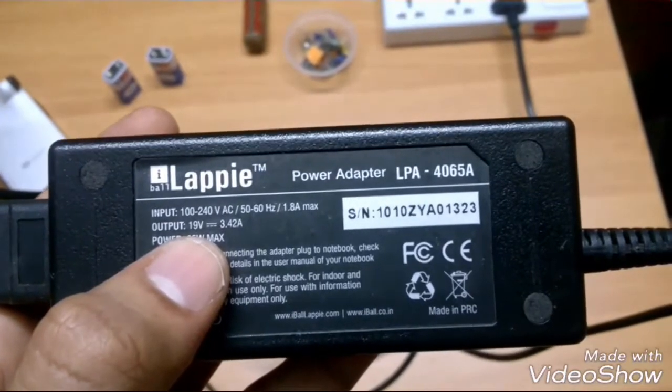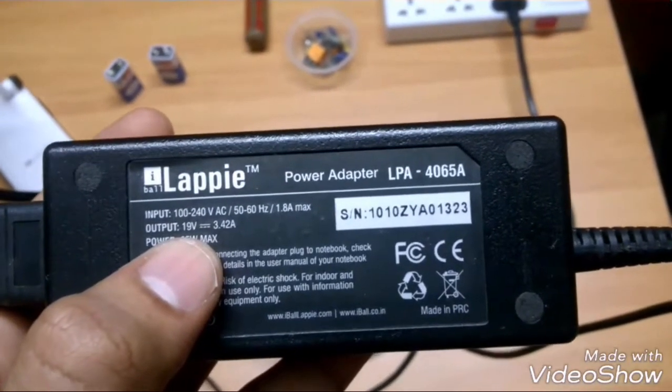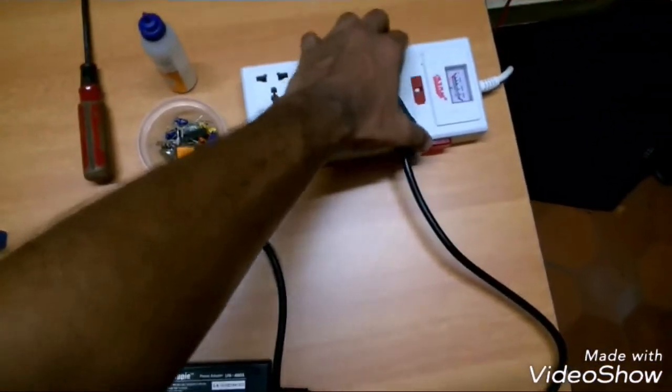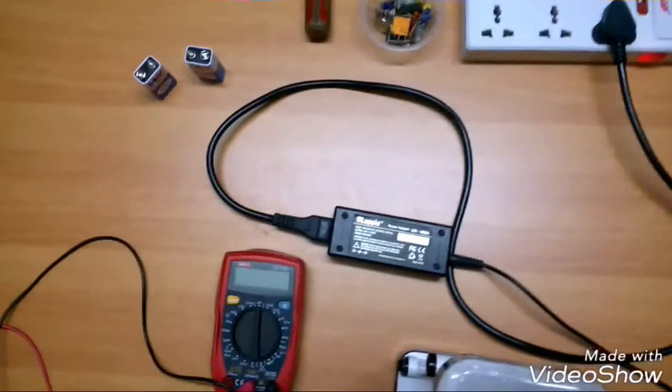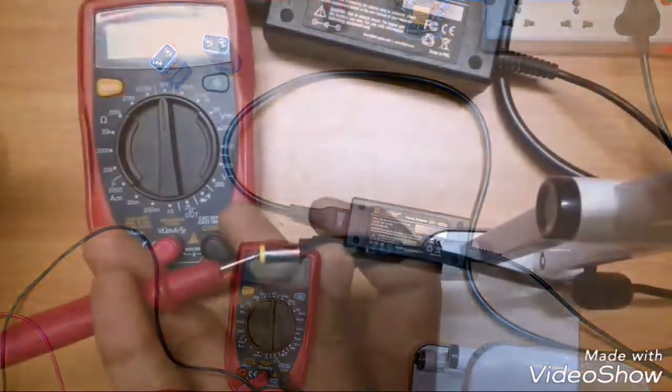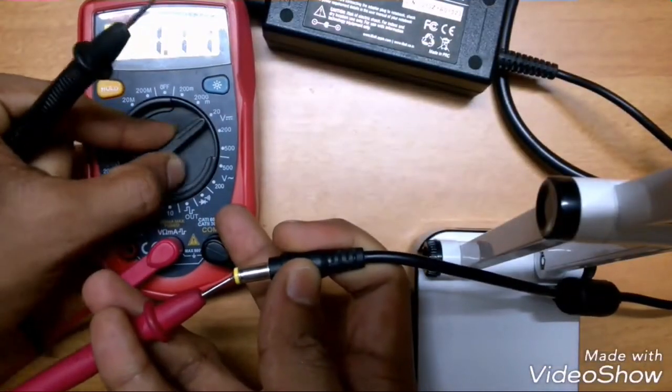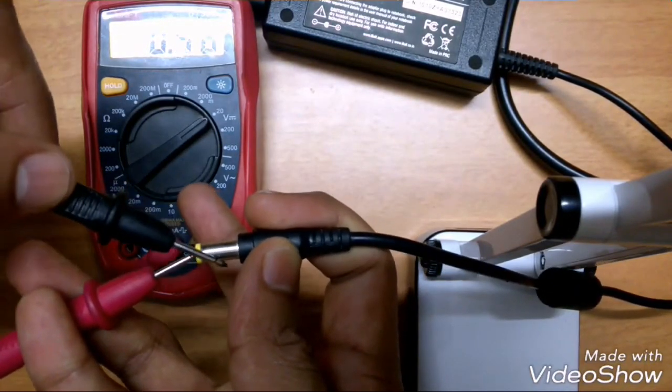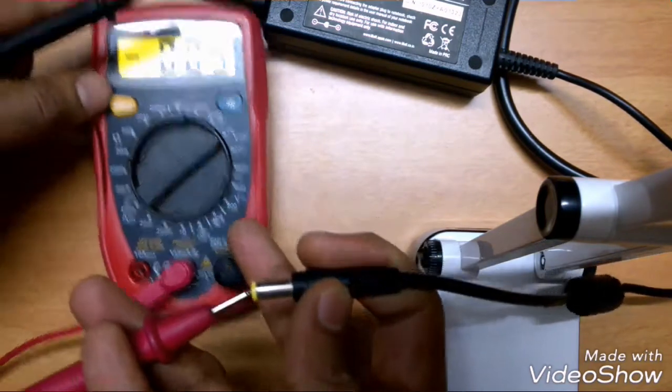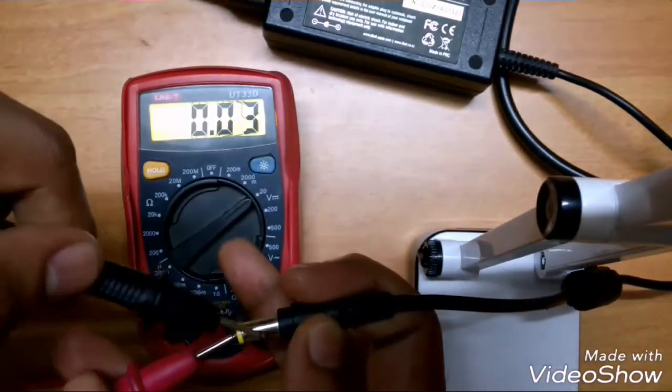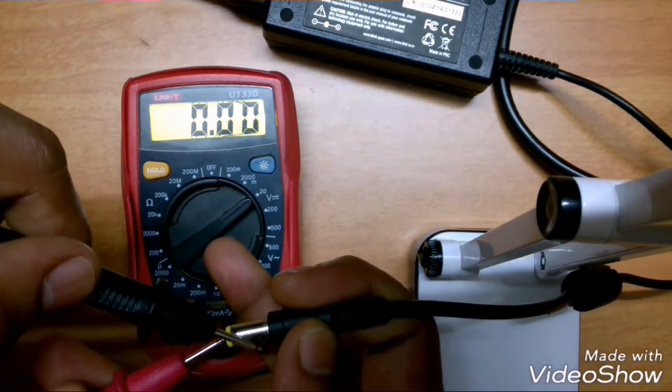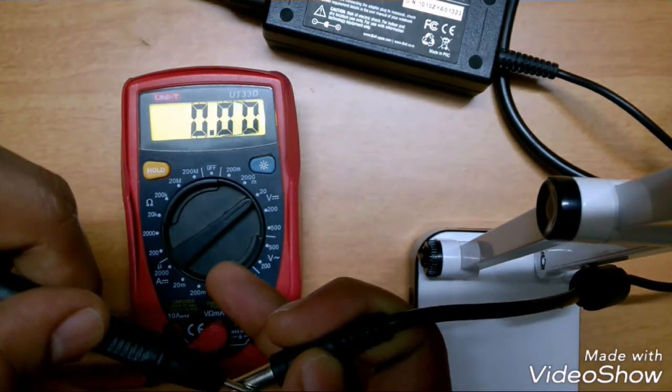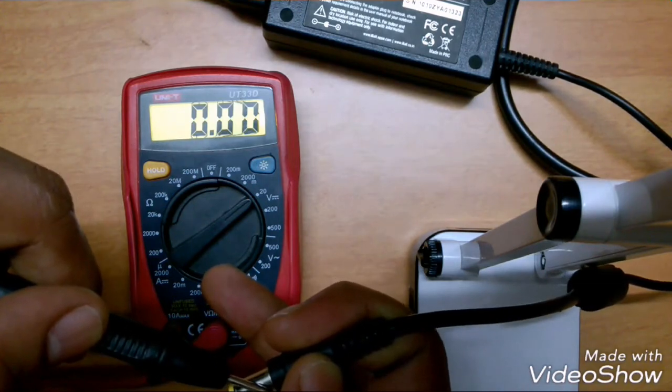As you can see here, this adapter should give 19 volt output when completely powered. We will now switch on the power supply and check how much voltage we are getting at the output. As you can see here, we are not even close to 19 volts, so there is something wrong with this adapter.